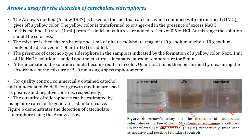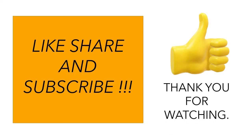For quality control, commercially obtained catechol and uninoculated iron-deficient growth medium are used as positive and negative controls respectively. The quantity of siderophore can be estimated by using pure catechol to generate a standard curve. As with all other methods, you plot your spectrophotometer readings against the standard curve to quantify. This concludes Arnow's assay and the complete topic.